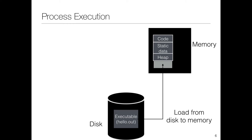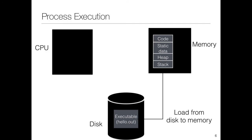The address space also contains the heap. We use the heap whenever we're using dynamic memory allocation — for example, the malloc command in C. We also use the stack, which is used for function returns — maintaining state and capturing all the function call returns. So we have four different components of the address space: the code itself, static data with initialized variables, the heap containing dynamically allocated memory, and the stack for maintaining state and capturing all function returns.